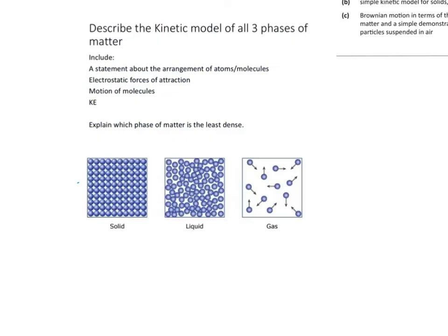When describing the kinetic model of a specific phase of matter, it's very important to mention a few parts that will get you most of your marks. You should make a statement about the arrangement of the particles — atoms, molecules, or ions — the electrostatic forces of attraction, the motion of the molecules, and a specific mention of kinetic energy as far as possible.